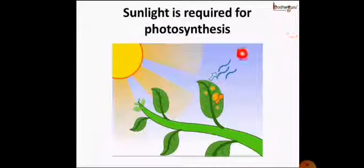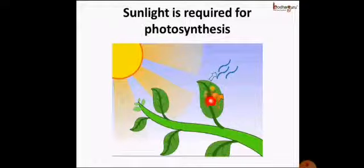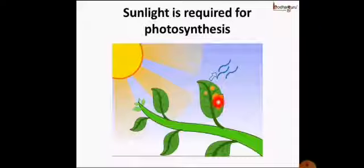The plant performs photosynthesis and stores food, and this food is a form of stored potential energy. The plant has potential energy, and it gets this potential energy from the Sun — it changes light energy from the Sun into potential energy.